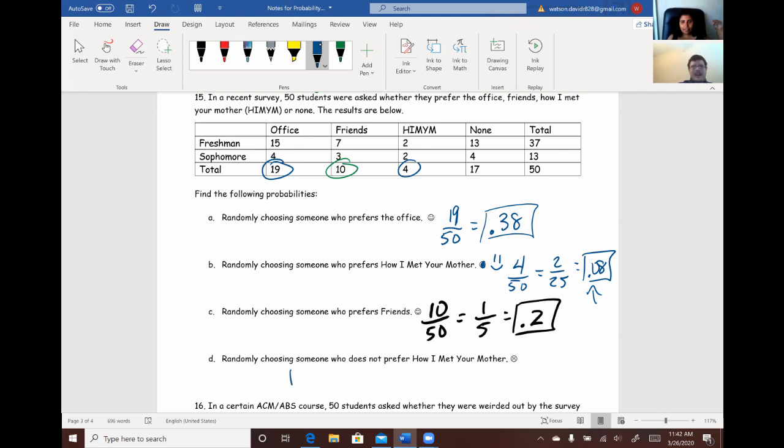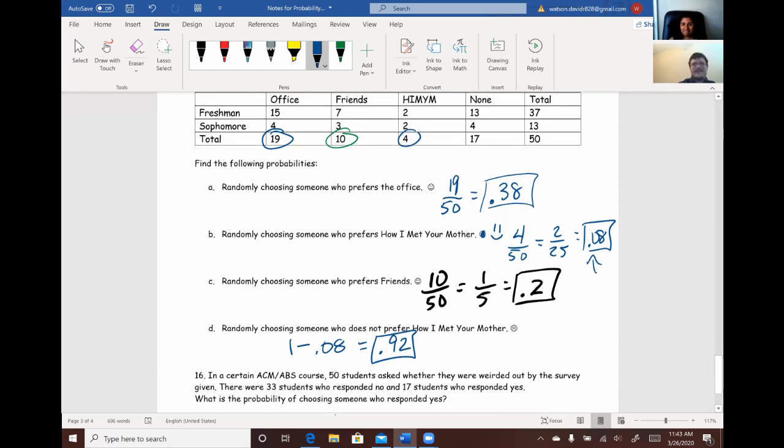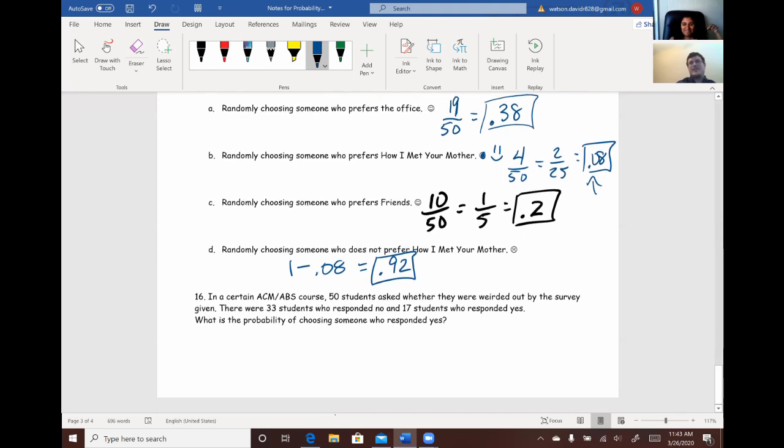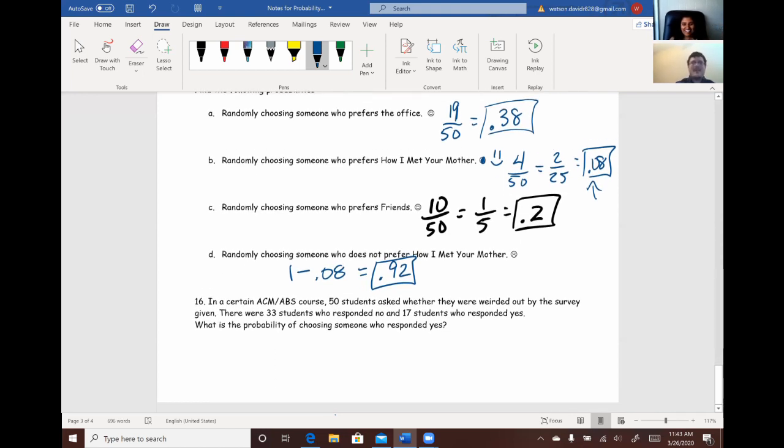So, if we want to find someone who does not prefer How I Met Your Mother, then just like we did last time, we could actually just take 1 minus the 0.08, which would give us 0.92. And that's it. It's a high probability. It's okay. It just means I'm more special than you are.